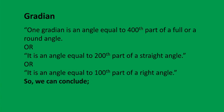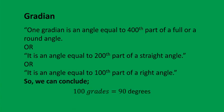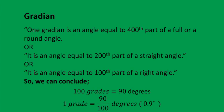So we can conclude: 100 grades is equal to 90 degrees, and 1 grade equals 90 divided by 100 degrees, which is equal to 0.9 degrees.